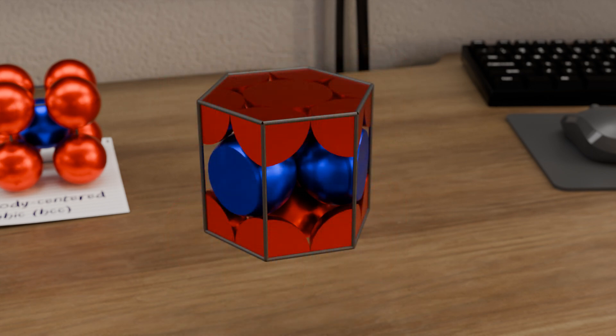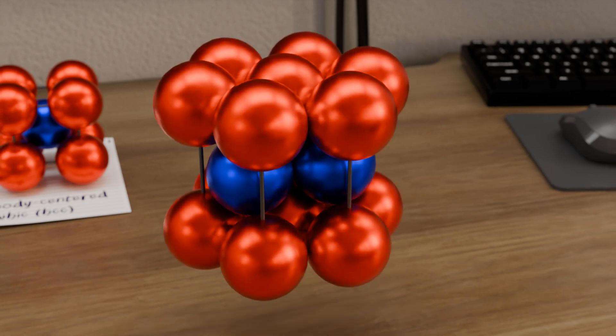The packing density in the hexagonal closest packed lattice corresponds to the maximum possible packing density of 74%. This maximum packing density applies quite generally to any spherical body.